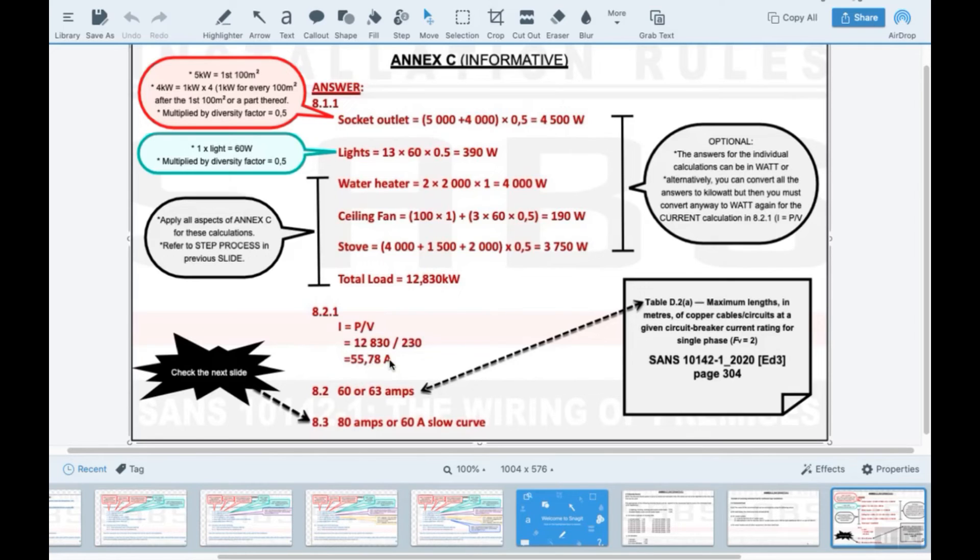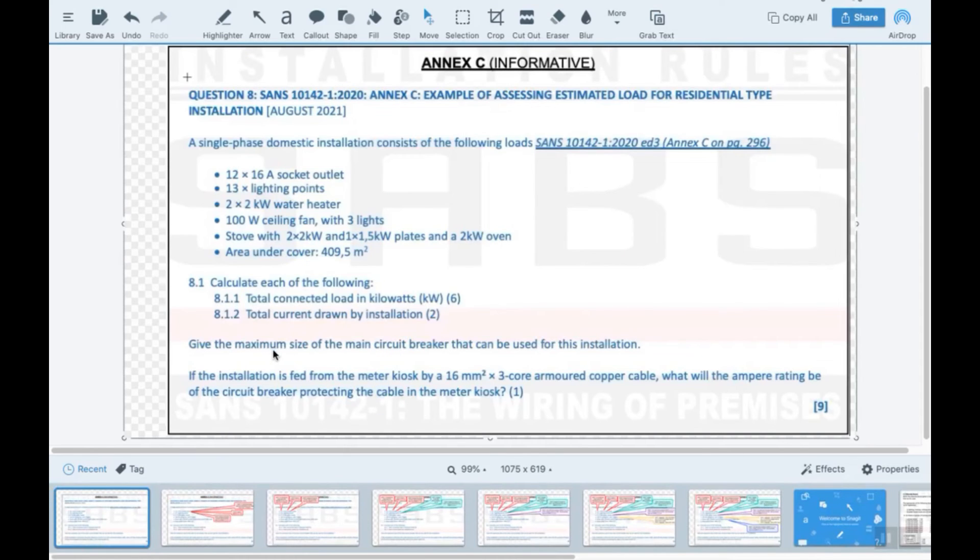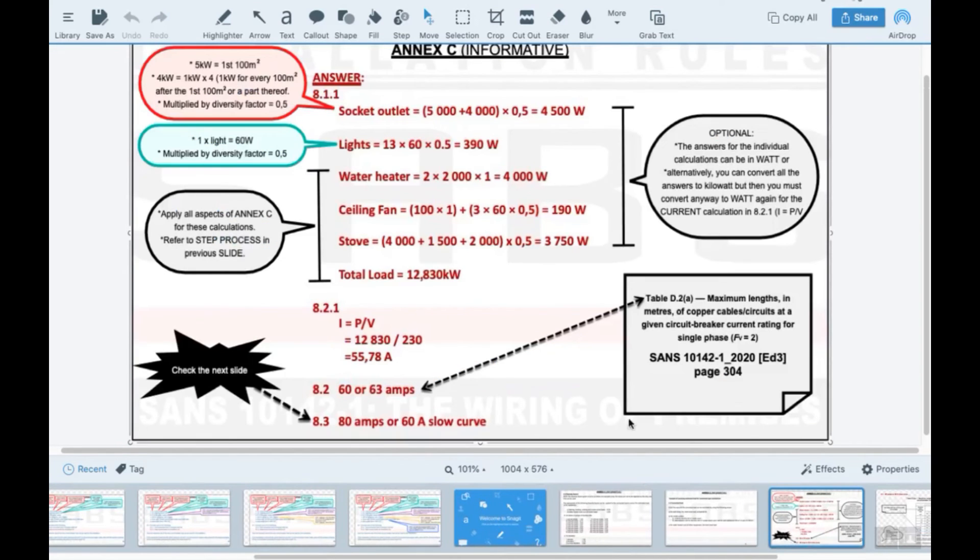Then the second part of the question would be, let's just have a look at the question: give the maximum size of the main circuit breaker that can be used for this installation. This is something that you should just know. And also they say if the installation is fed from a meter kiosk by a 16 millimeter square three core armored cable copper cable, what will the ampere rating of the circuit protection protecting the cable be? So that's for one mark and that's probably also for one mark there. So I got it a little bit messed up here, that should be 8.2 and 8.3.